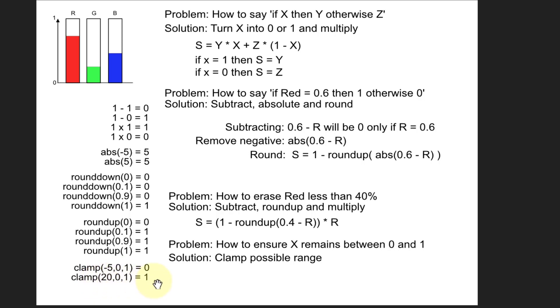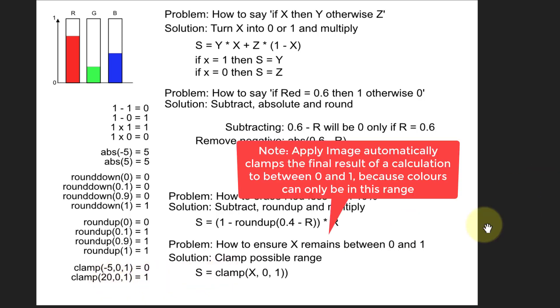Clamping 20 between 0 and 1, that's not going to go beyond 1, so it's going to be 1. So you just do it in an expression like that.